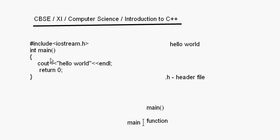After int main, whatever you want to write inside that function has to come inside curly brackets. After the opening curly bracket we write cout. cout is basically for output and it stands for console output — the console here is the monitor where we want the output to be shown. cout is defined in the iostream.h header file, so if you do not include iostream.h then the cout line will produce an error.